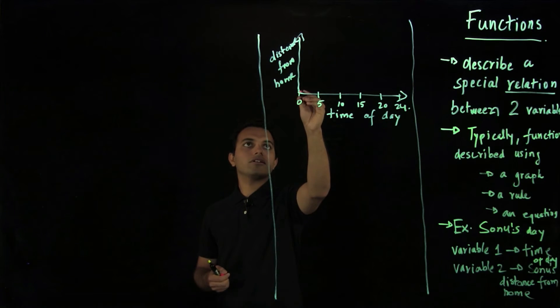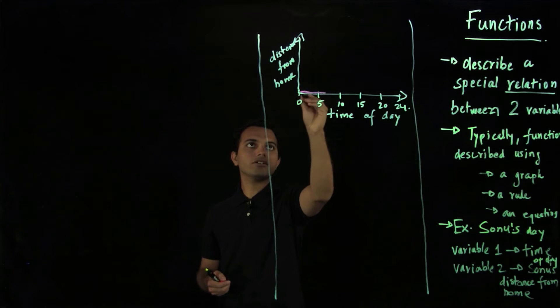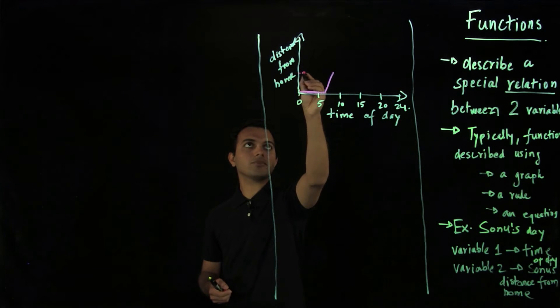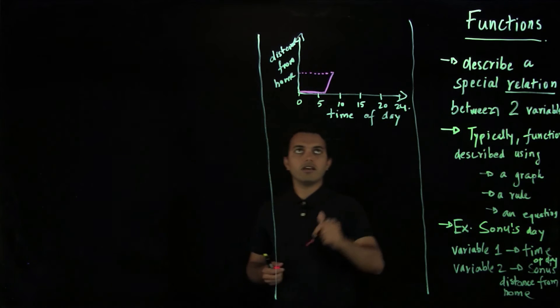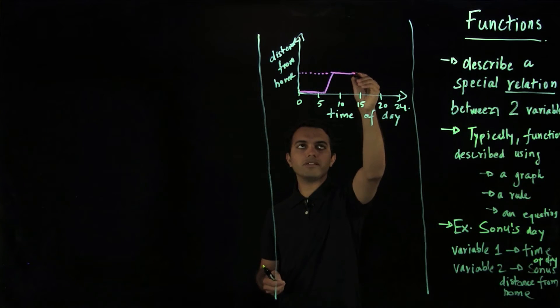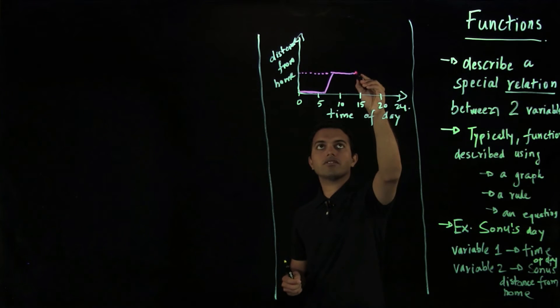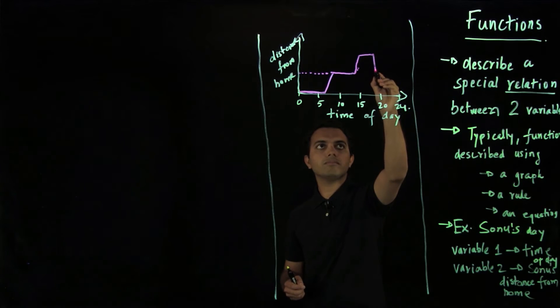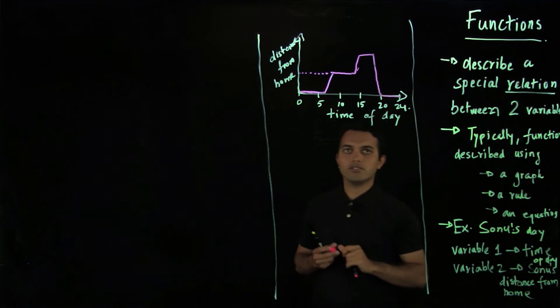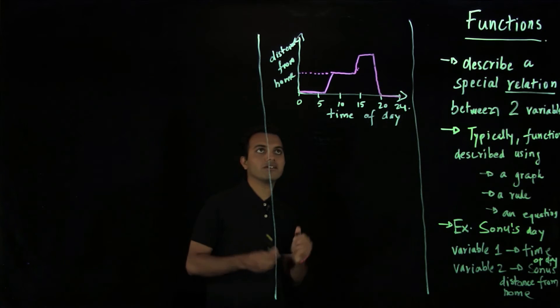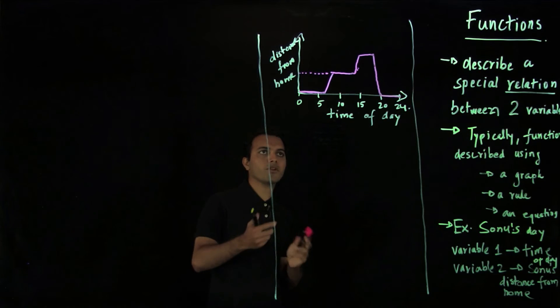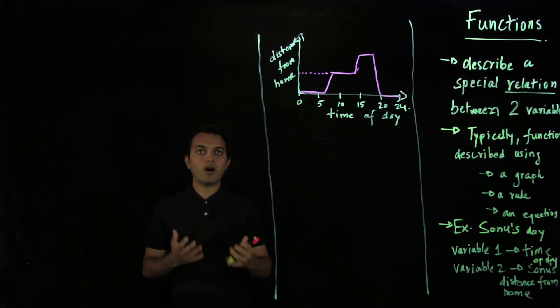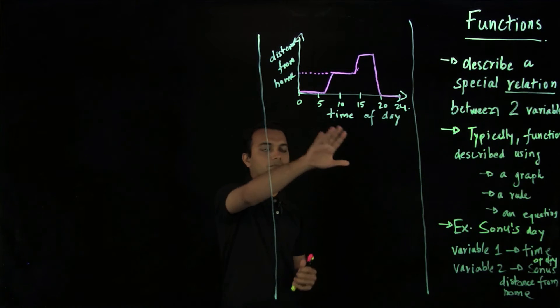I'll divide so on x-axis I'll draw time of day and on y-axis I'll draw distance from home. We'll count time from midnight in 24-hour format. So in morning Sonu was at home till 6 o'clock, then he went to school. The distance was some distance, and then he was at school till roughly 2 pm which is 14 hours, then he went to a friend's place, spend some time there, and then comes back home and spends the rest of the time at home. So here we see that very intuitively we can describe relationship between two variables using a plot, and this plot essentially is describing a function of where Sonu is throughout the day.